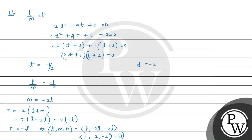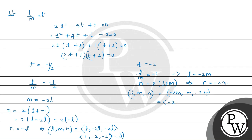For t equals minus 2, we have L/M equals minus 2, which implies L equals minus 2M. Then N equals 2(L + M) equals 2(minus 2M + M) equals minus 2M. So L, M, N are proportional to minus 2M, M, minus 2M, giving direction ratio minus 2, 1, minus 2.